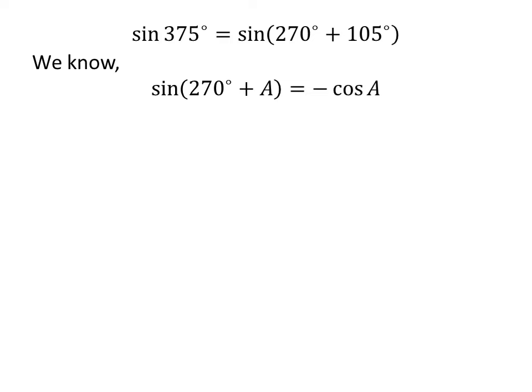We know the trigonometry identity: sine of 270 degrees plus A is equal to minus cosine of A. The proof of this trigonometry identity is explained in the video appearing in the upper right corner of this video. The link of the video is also given in the description section.